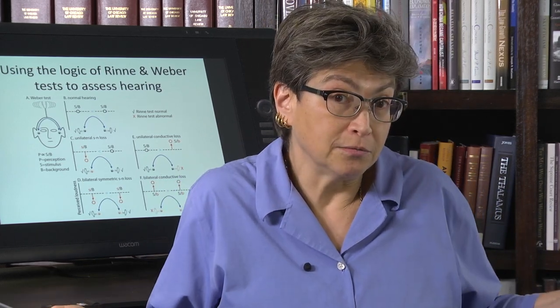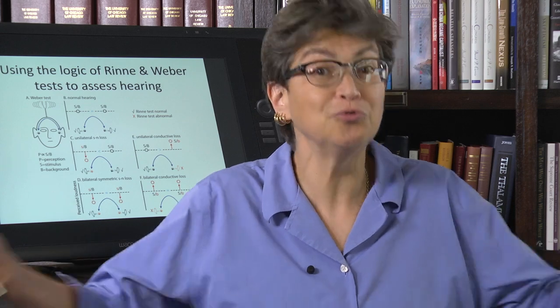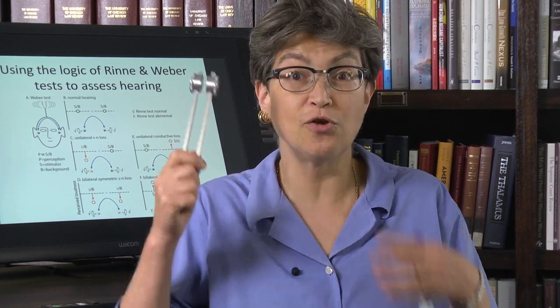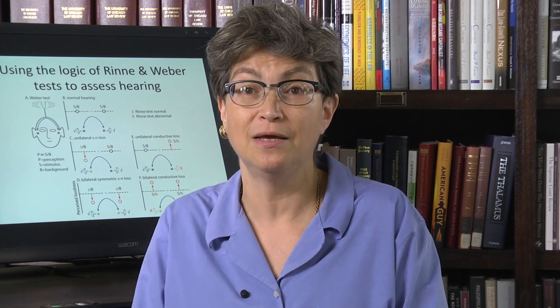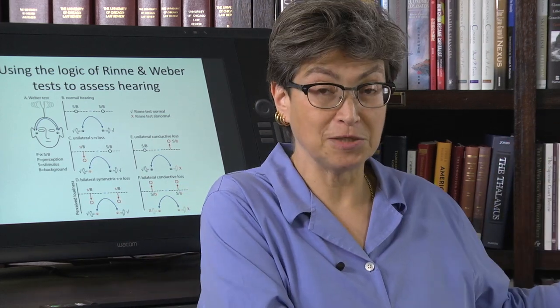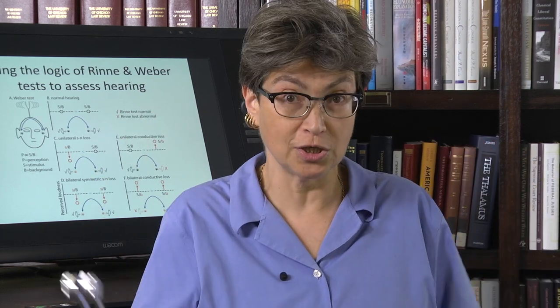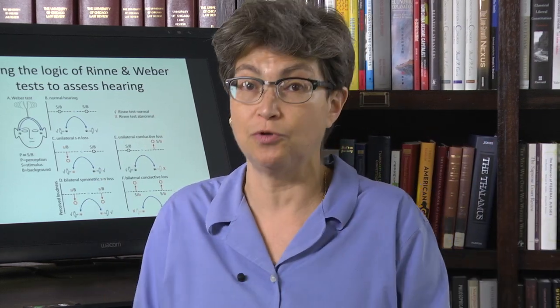So how would you tell? Well, you do Rinne's test and you figure out whether you have a conductive loss. So if you have a conductive loss on one side, then that explains the Weber's example. If conduction is fine on both sides, then you have a sensory neural loss.